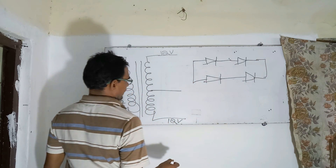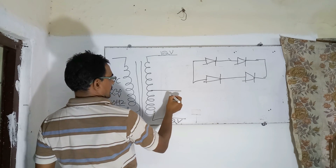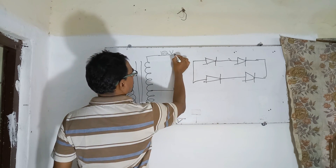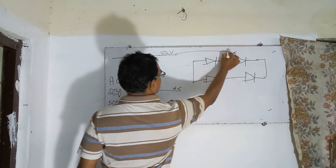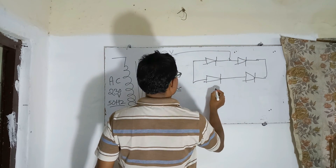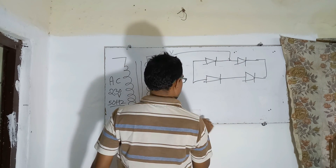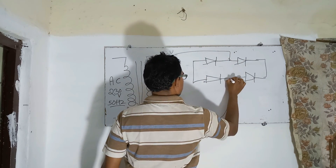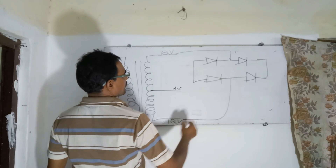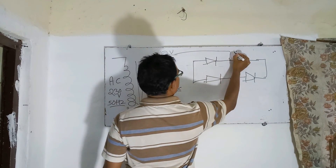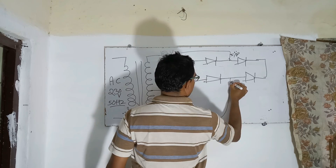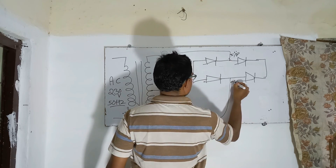Now I will take this — this is the node connection, center-tap is the node connection. This plus input, and input.